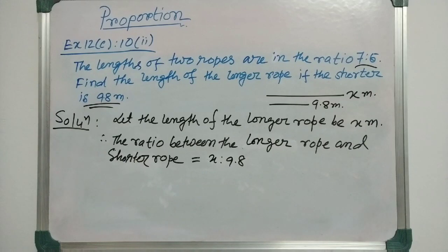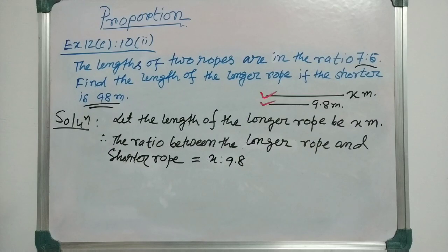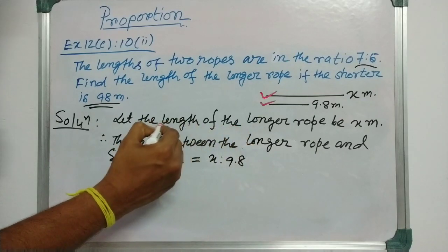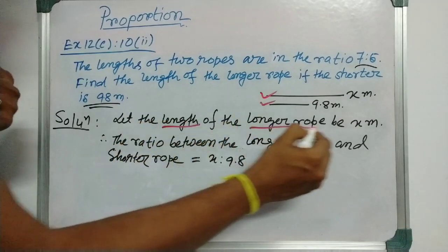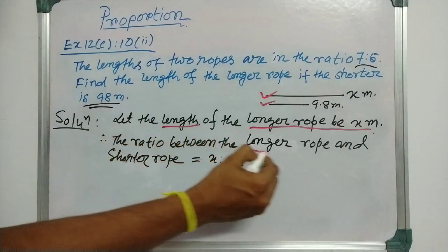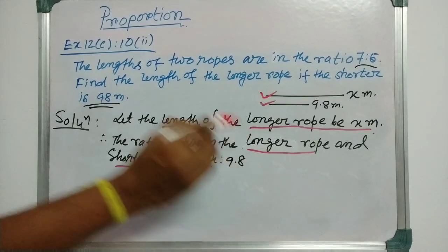Solution: here are 2 ropes, one is longer and one is shorter. We have to find the value of the longer one. Therefore, we assume that the length of the longer rope is x meter. The ratio between the longer rope and the shorter rope will be x is to 9.8.